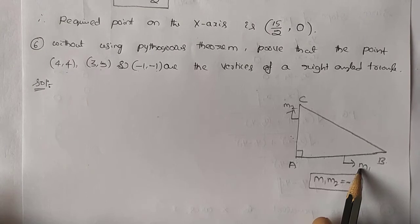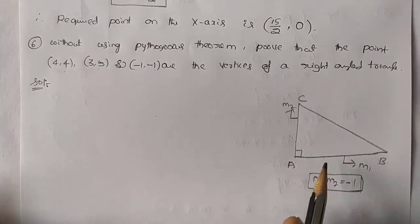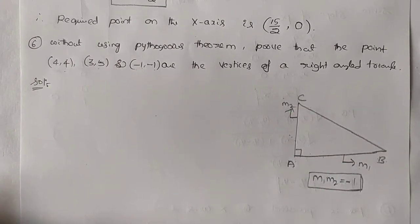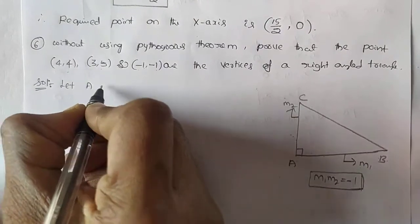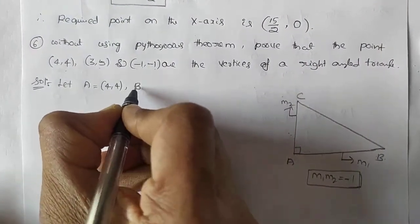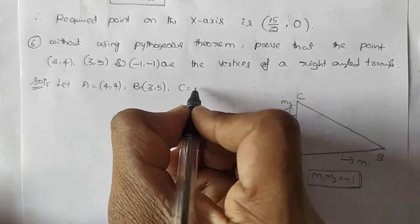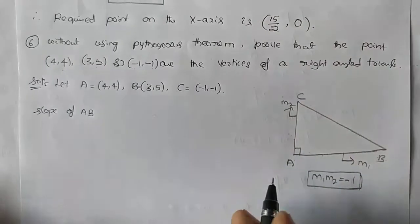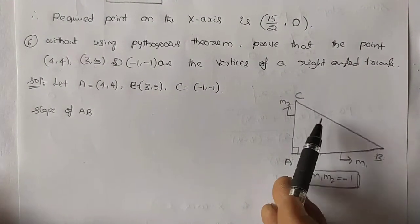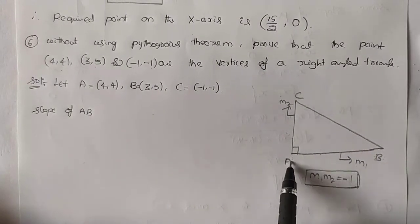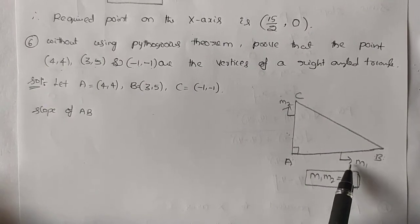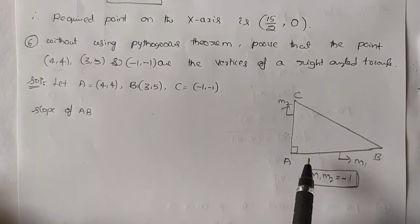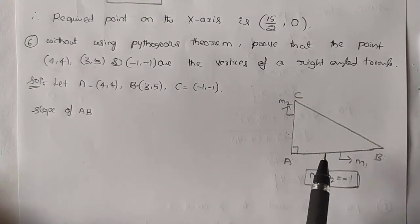Let us find slope M1 joining A and B, and slope M2 joining A and C. Let A be (4, 4), B be (3, 5), and C be (-1, 1). We need only the slope of AB and slope of AC — no need to find slope of BC. Then we find their product. If we get minus 1, these are the vertices of a right-angled triangle; if not, they are not.